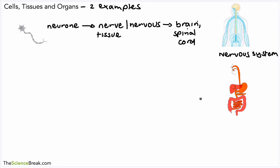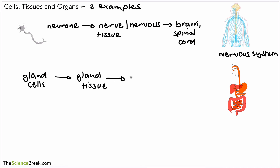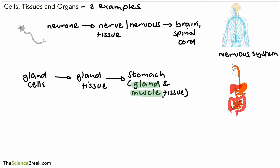We have one final example, which is going to end up with the digestive system. One type of cell in the digestive system is a gland cell. Gland cells can join together to make gland tissue, or glandular tissue. We have glandular tissue joining with muscle tissue as well to make the stomach — so the stomach is made of glandular tissue and muscle tissue. That's one of the organs of the digestive system, and the organs of the digestive system join together to make the digestive system.